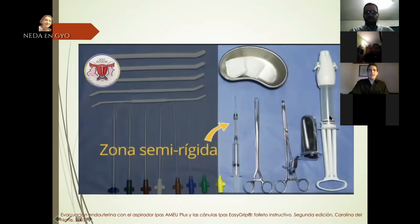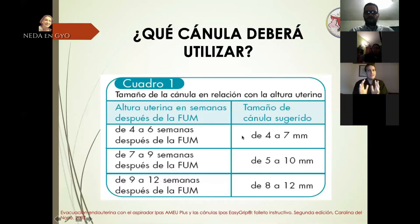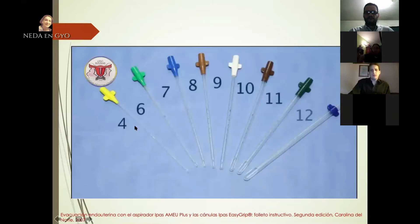El aspirador tiene una capacidad de 60 centímetros cúbicos o 60 mililitros, y al llenarse un 90% continúa la aspiración. En cuanto a la cánula a utilizar, se selecciona en relación a la altura uterina en semanas: de 4 a 6 semanas se usan cánulas de 4 a 7 milímetros; de 7 a 9 semanas, cánulas de 5 a 10 milímetros; y de 9 a 12 semanas, cánulas de 8 a 12 milímetros. A mayor número de semanas, mayor diámetro de cánula. Estas tienen colores internacionales característicos.